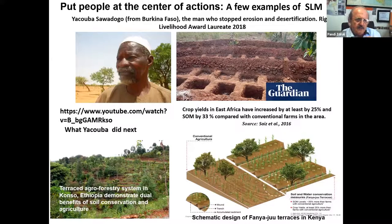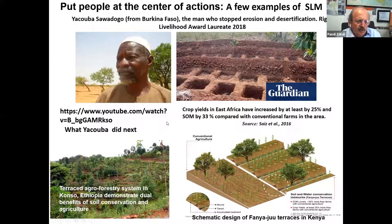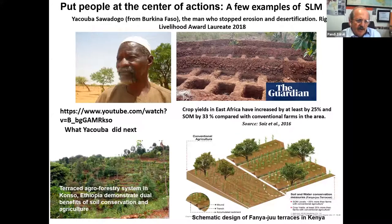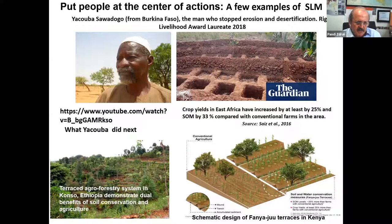Yacouba Sawadogo from Burkina Faso was called the man who stopped erosion and desertification. In these zaï pits, he planted trees, put in mulches and organic manure, and planted cereals — creating a man-made agroforestry system. There are examples like this in Konso in Ethiopia with benefits for soil conservation and agricultural production, and terraces like the Kanya terraces in Kenya. Another example: in the Matrouh region in the western desert of Egypt, we started a rural development project in 2013, coordinated by our institute in Bari and funded by Italian cooperation, collaborating with the Desert Research Center in Egypt.